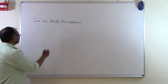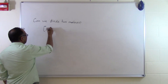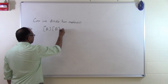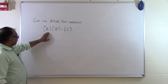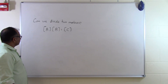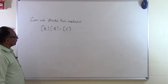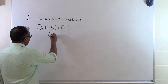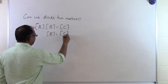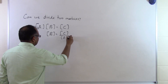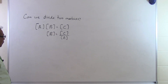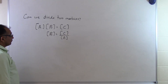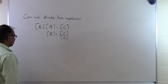In this segment we will talk about whether we can divide two matrices. Let's suppose A times B is equal to C, where the number of columns of A is the same as the number of rows of B, so A times B is defined. It would be tempting to say B is C divided by A, but we don't define matrix division like that. So is there something equivalent to dividing two matrices? Yes there is.